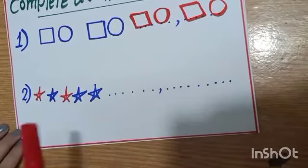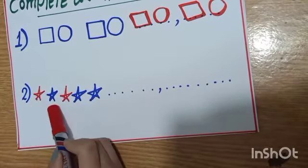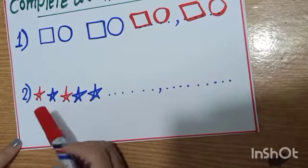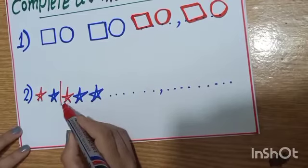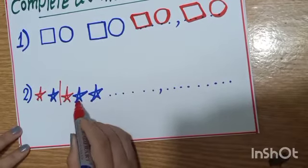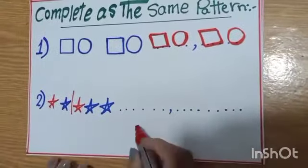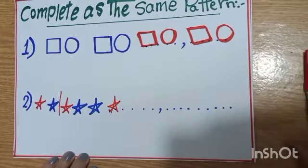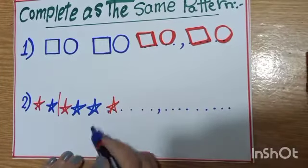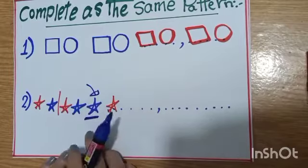The second one, it starts by red star, then blue star. Start again. One red star and two blue stars. So I will complete one red star and here, it increases one blue star.